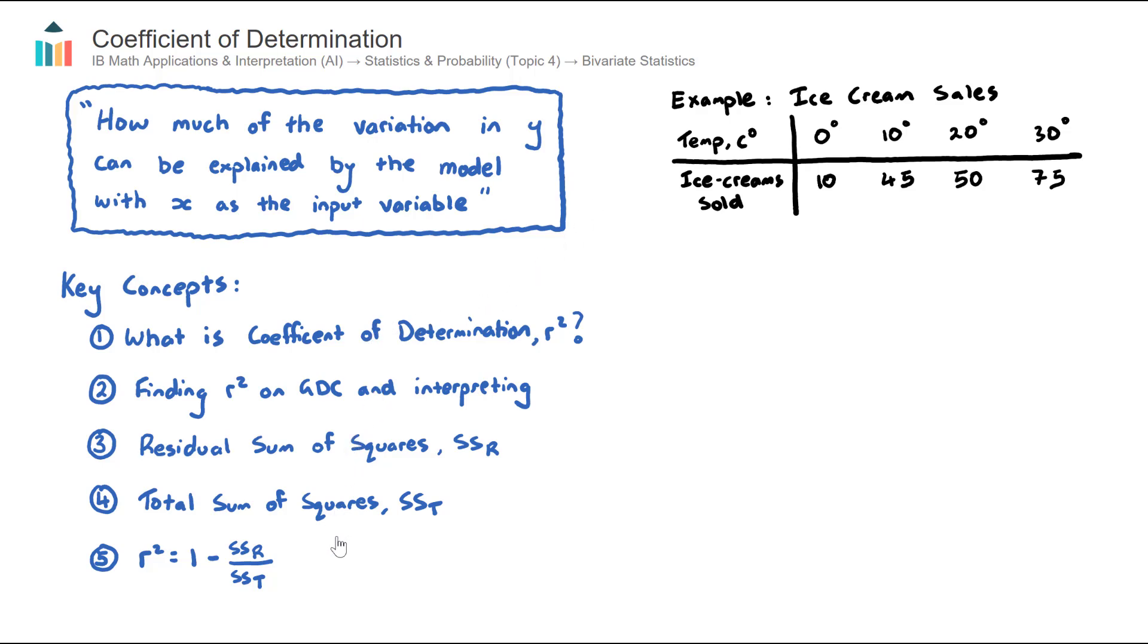There are five key concepts that I'd like to go through in this video. Let's start with number one. What is the coefficient of determination? And we call this the R-squared value. I have the definition here, but when we first read through the definition, it doesn't make a whole lot of sense. So I'm about to read through it now, but then we'll talk about it in the context of this simple example here, and hopefully it'll click for you.